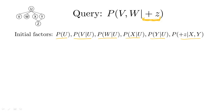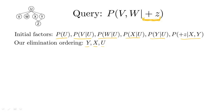When running variable elimination, we have a choice of ordering. We're going to fix the ordering for this exercise: we'll first eliminate Y, then X, then U. Keep in mind that in general, this choice of ordering can play a big role in determining how computationally expensive variable elimination is, as the ordering can affect the size of the factors generated along the way.